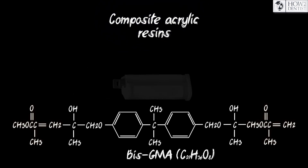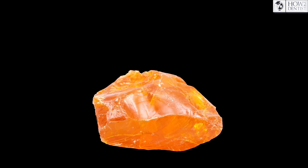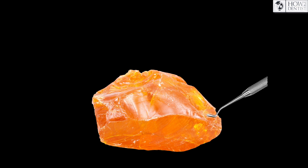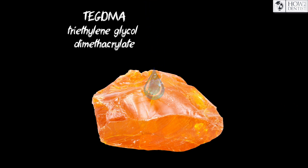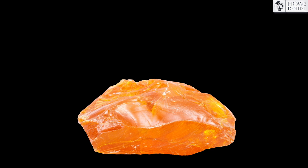Bis-GMA and its derivatives are presented in the form of a very thick resin, which is difficult to work with. Therefore, they also contain diluents, such as TE-GDMA, which ensure the composite's fluidity.